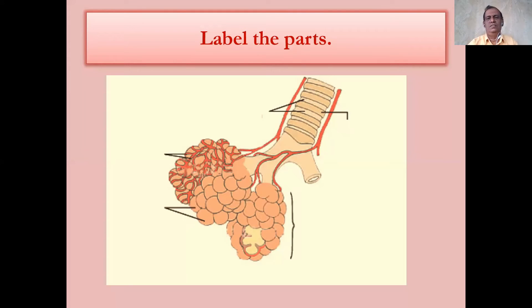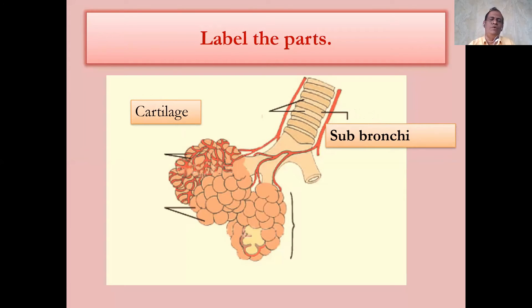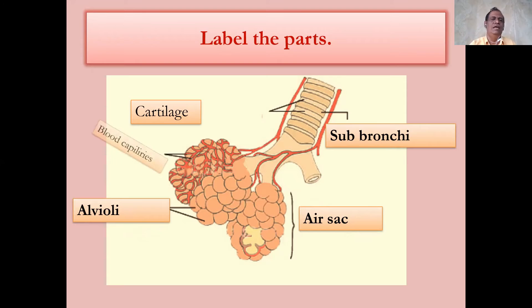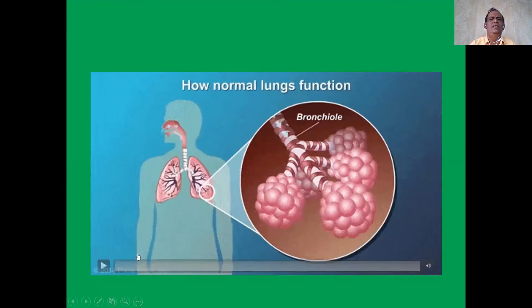The next question is to label the parts. The anatomy of the respiratory system is very important to understand respiration. The cartilage covers the sub-bronchi and gives support. The next part is the air sac — that is a larger part. After that, the alveoli is a small sac. The alveoli is the functional unit of the respiratory system. Finally, the blood capillaries are richly supplied to the alveoli for efficient gas exchange.